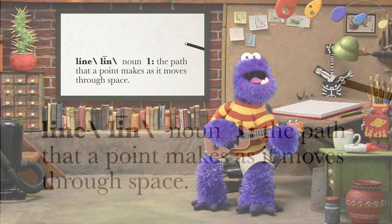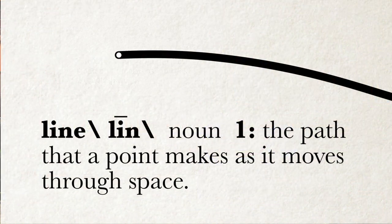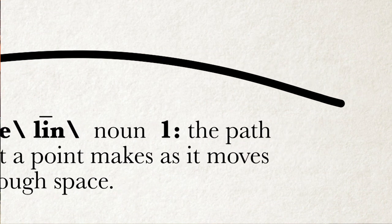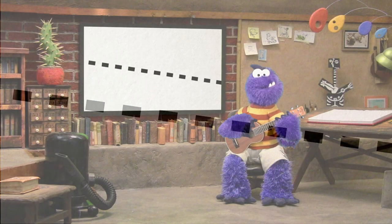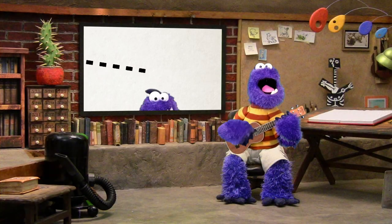A line is the path that a point makes as it moves through space. There are really only two basic kinds of line: lines can either be curved or straight. But there's also horizontal, vertical, diagonal, parallel, and converging lines. There's S-curve, spiral, zigzag, and interrupted. Those are the different kinds.